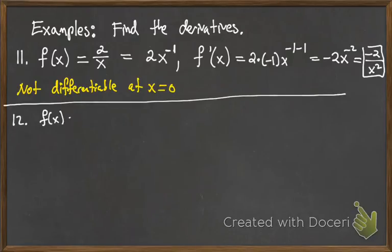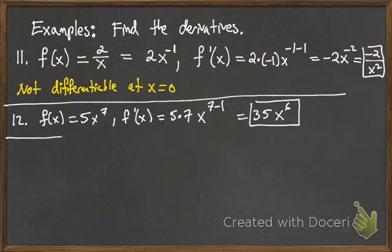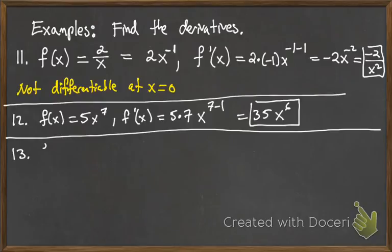For f(x) = 5x^7: bring down the exponent 7, giving 5·7·x^(7−1) = 35x⁶.